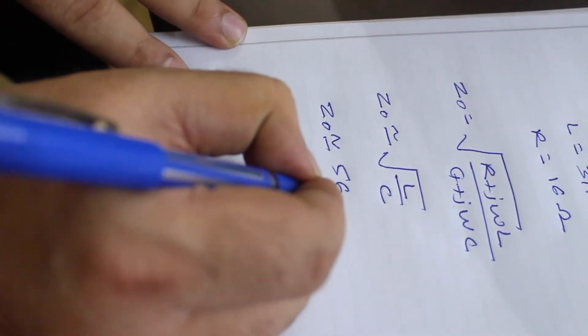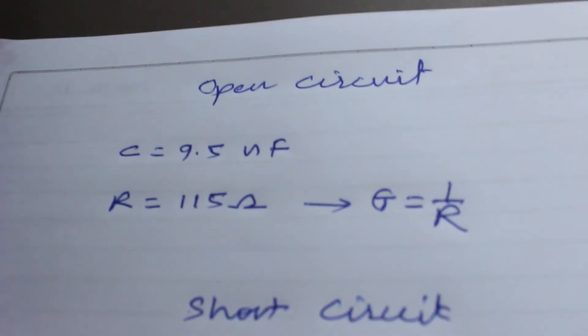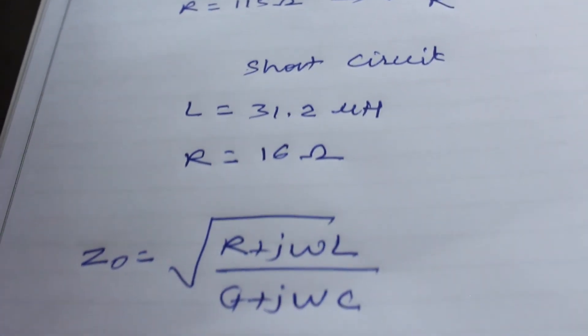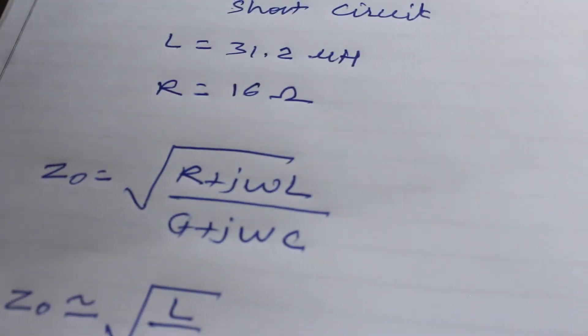We put these values and we get approximate value of characteristic impedance as 56 ohm. So in this way we have verified that the characteristic impedance value of this coaxial cable is around 56 ohm. Because the apparatus is of academic purpose there might be some variation, so it should come around 50 ohm.